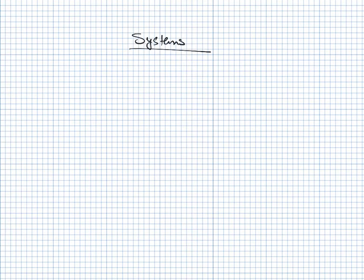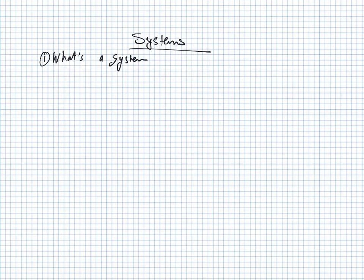Now we are discussing systems, no longer signals. As we did for signals, we will start by discussing what a system is. A system is something that takes an input and produces a certain output by processing that input.